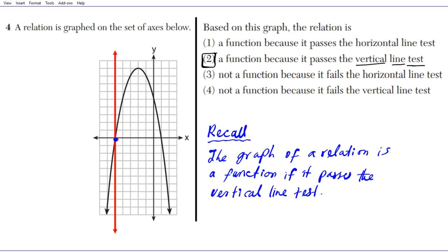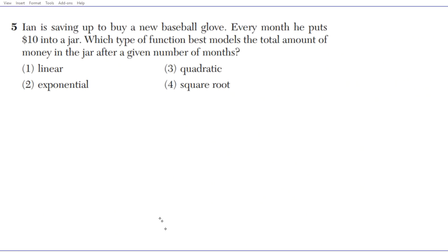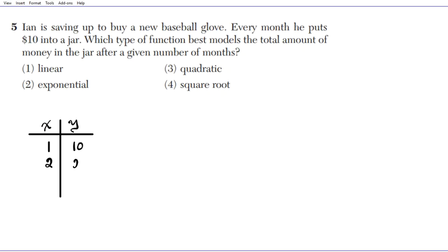Let's take a look at question 5. Iron is saving up to buy a new baseball glove. Every month he puts $10 into a jar. Which type of function best models the total amount of money in the jar after a given number of months? To help determine this, let's generate some values. Let x represent months and y represent the total amount of money in the jar.